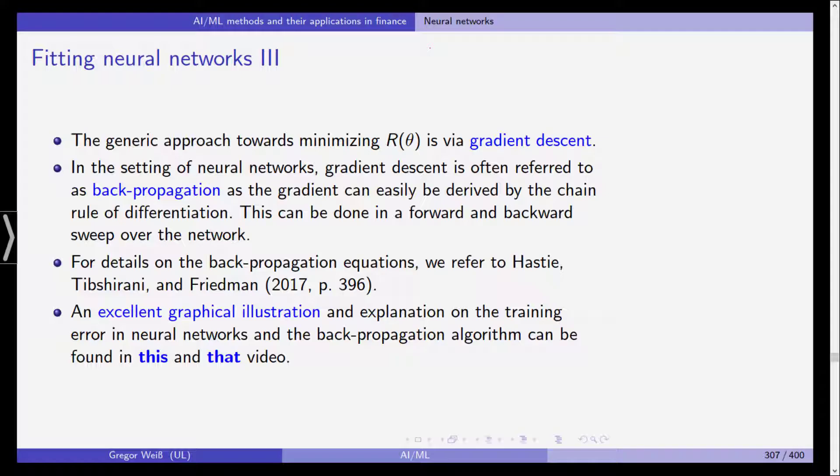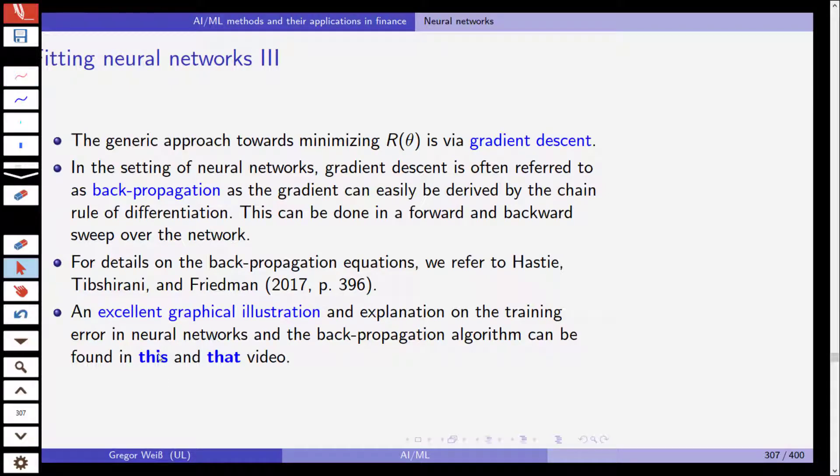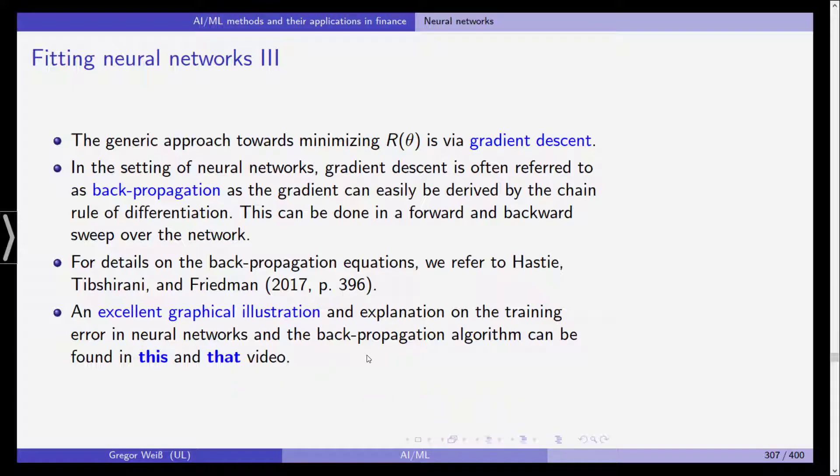Now in the setting of neural networks, the gradient descent is usually referred to as back propagation, quite famously, as the gradient can easily be derived by the chain rule of differentiation. And this can be done in a forward or backward sweep over the network. For details, you should have a look at the Hastie, Tibshirani, and Friedman textbook. You can also look, and I would appreciate if you do this and recommend this highly, take a look at these two links here and you will find two videos, this one and this one, in which the back propagation algorithm in the context of neural networks is quite nicely explained.